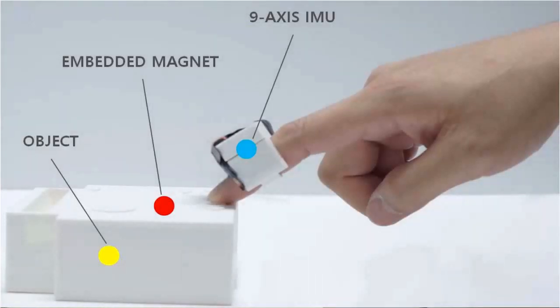We present T-Ring, where we bring interactivity to objects by simply embedding a small magnet within a finger-worn device.